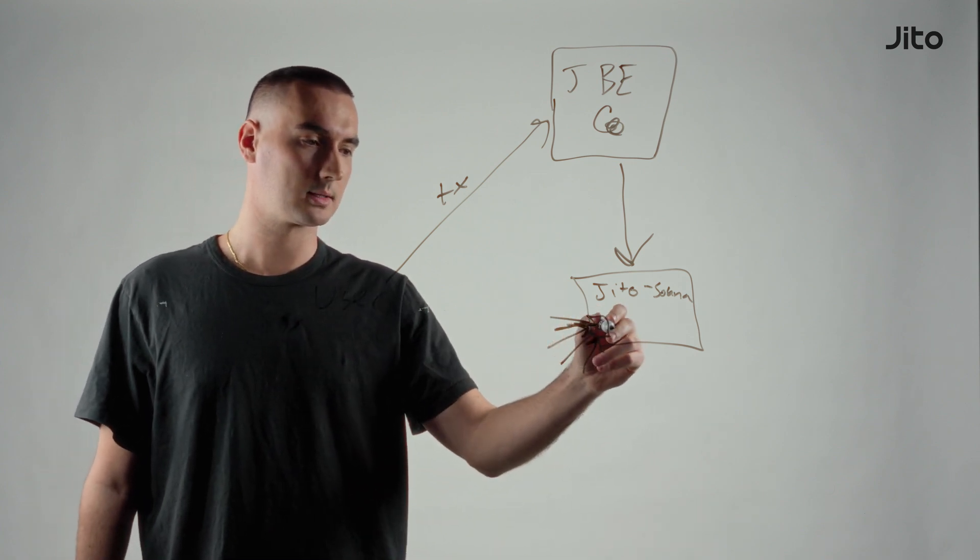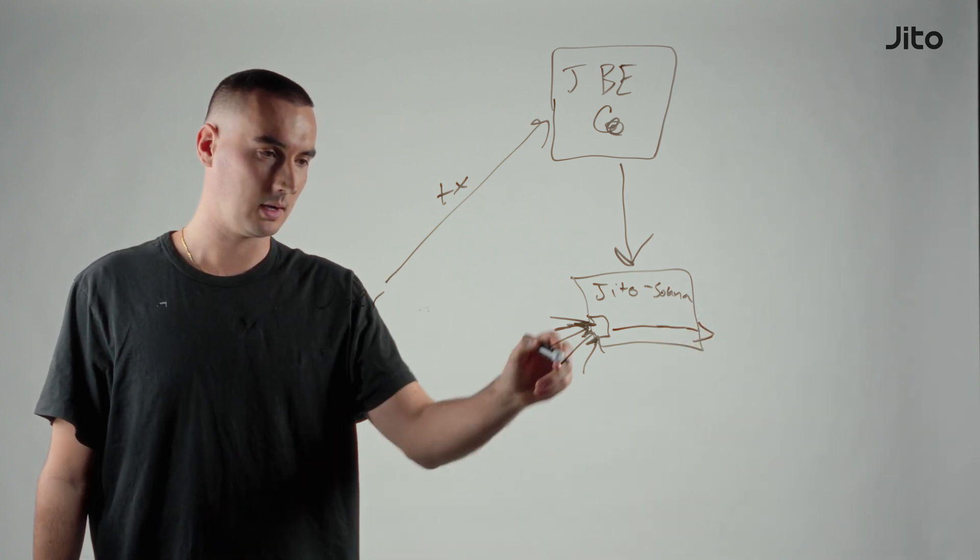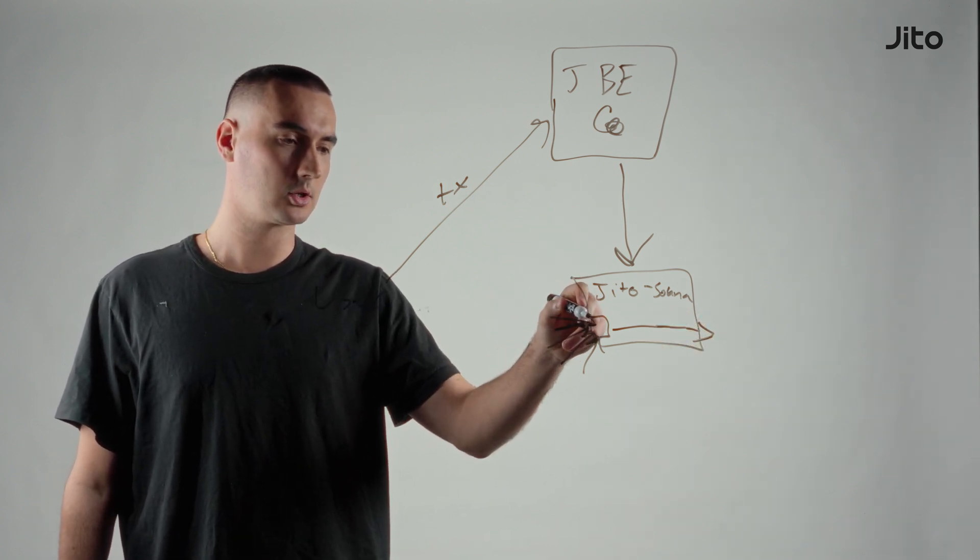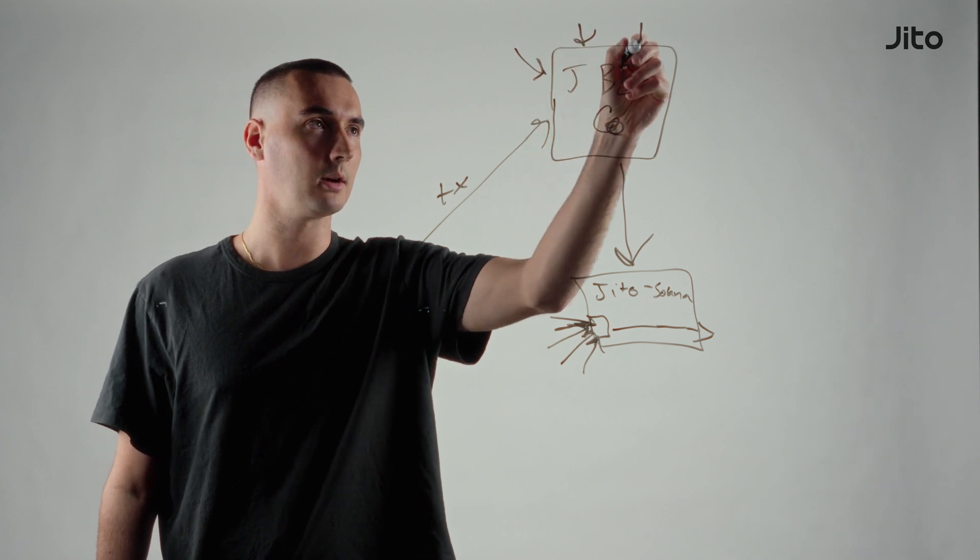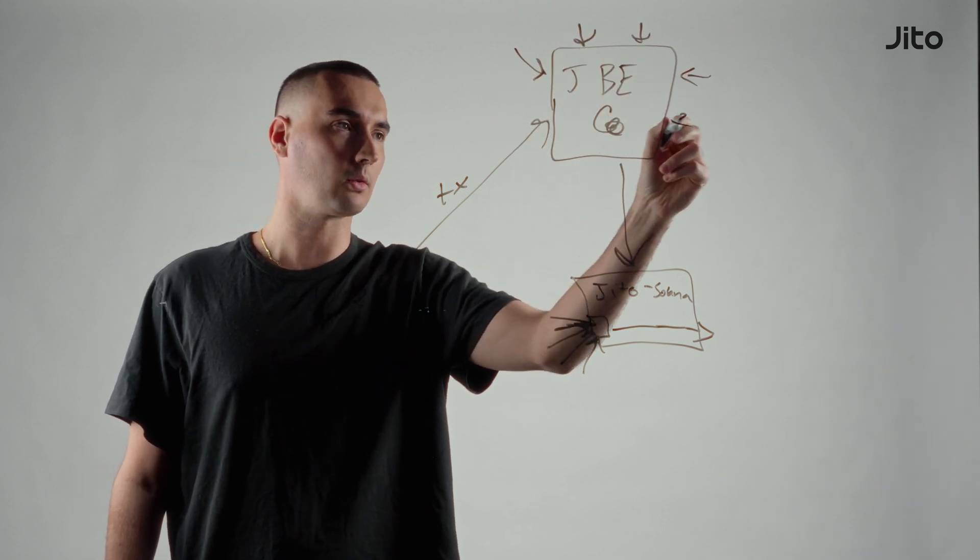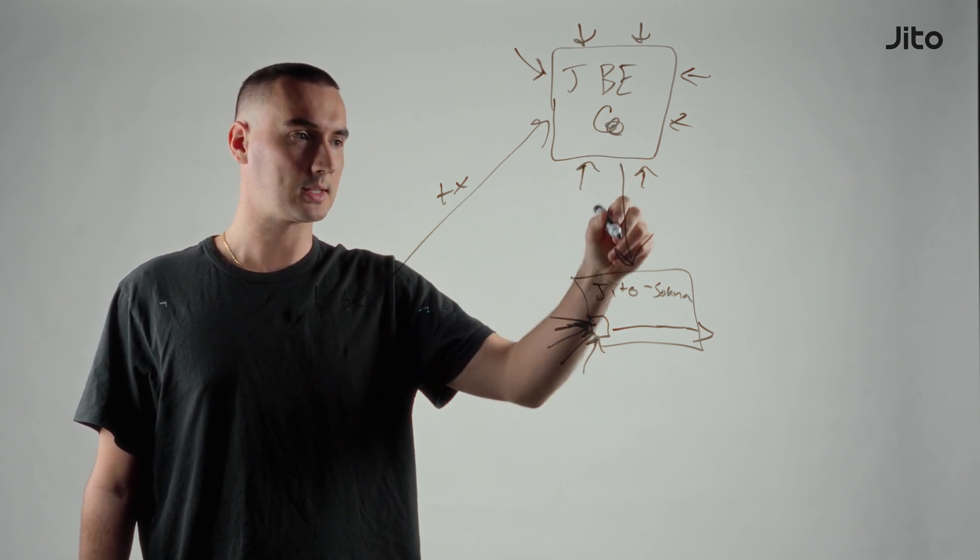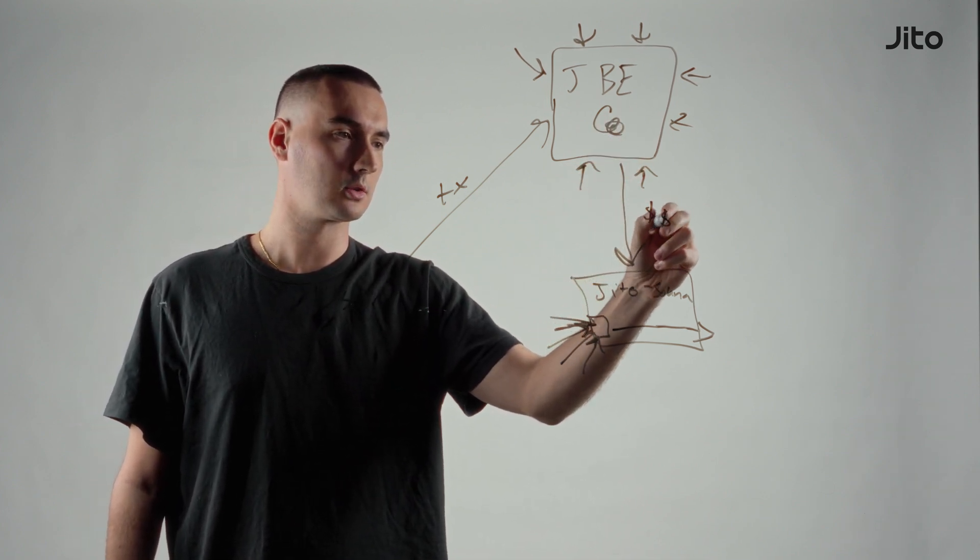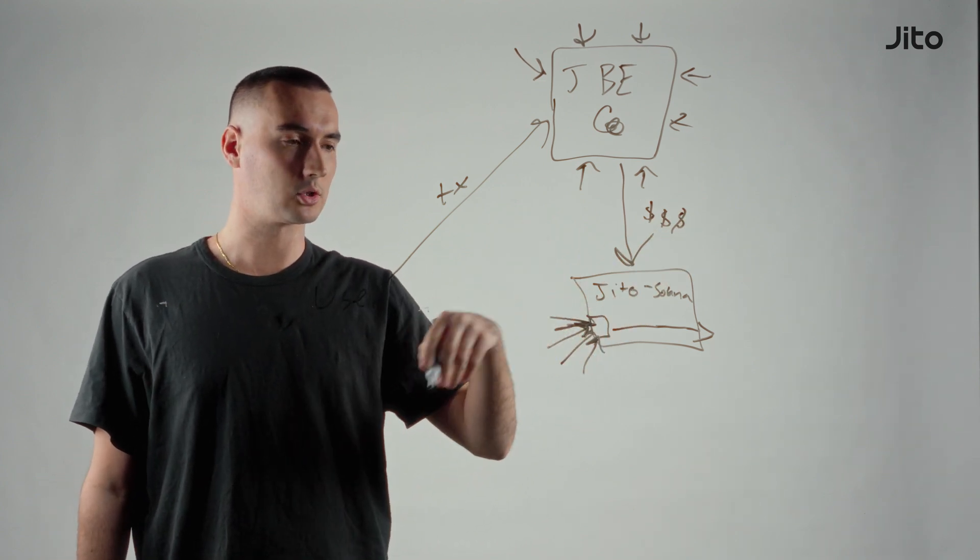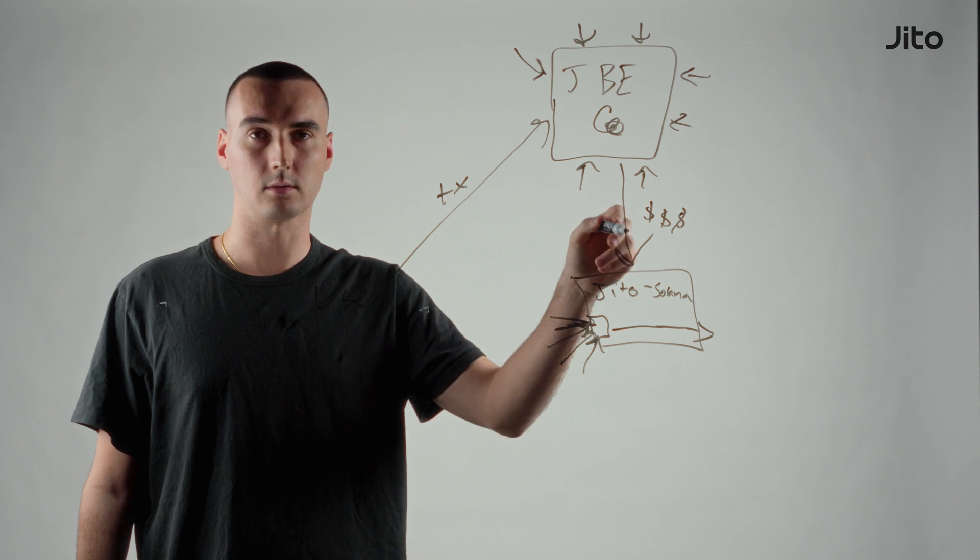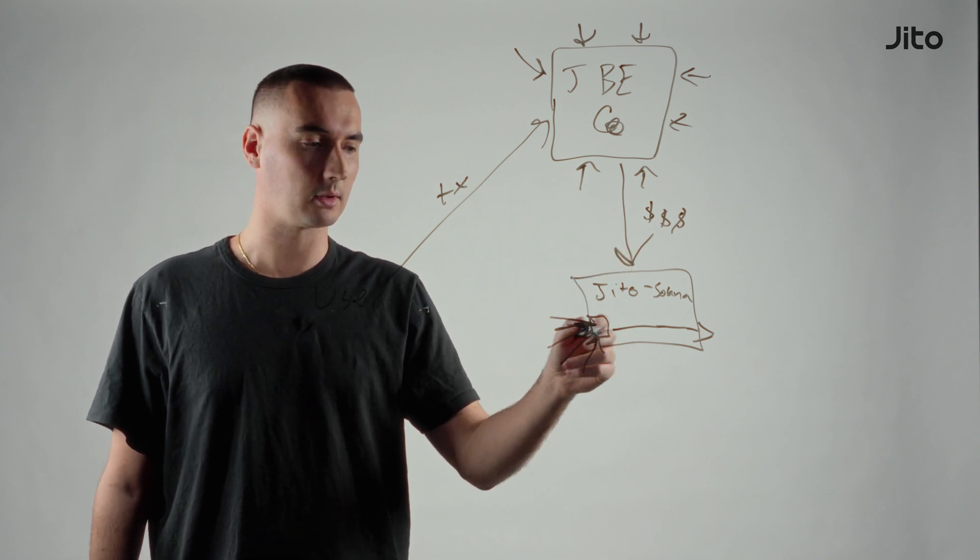The normal transaction system backs up and essentially what Jito does is we kind of eat all the spam up here and we will sort through all the garbage for the validator and basically just send it the best transactions through here. Essentially validators can make more money through this pipeline and searchers and traders don't have to go through all the spam.